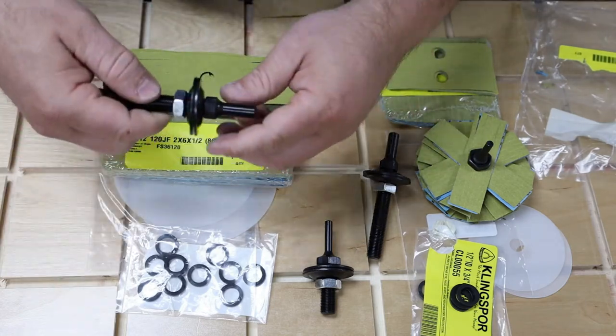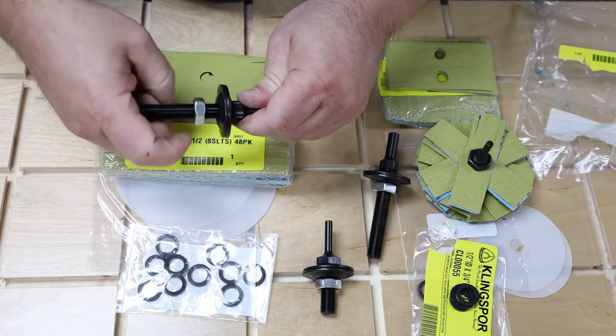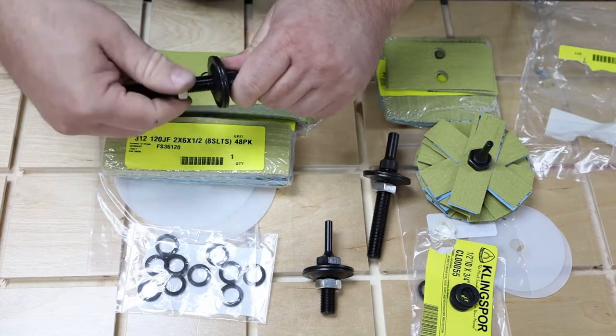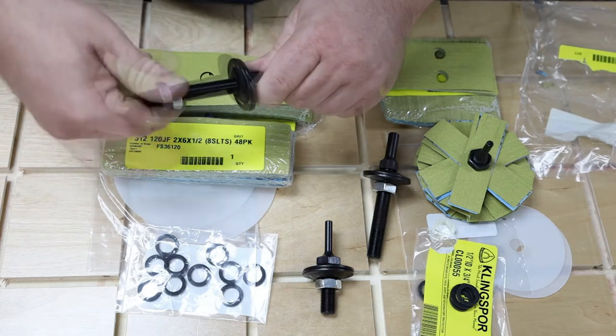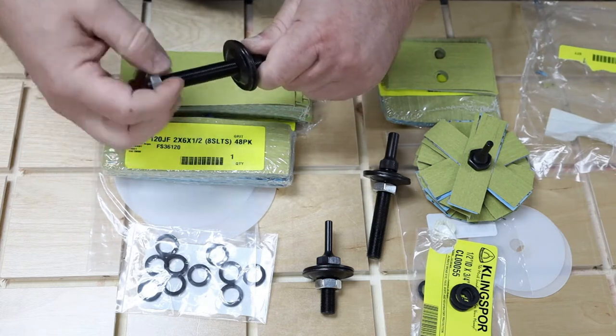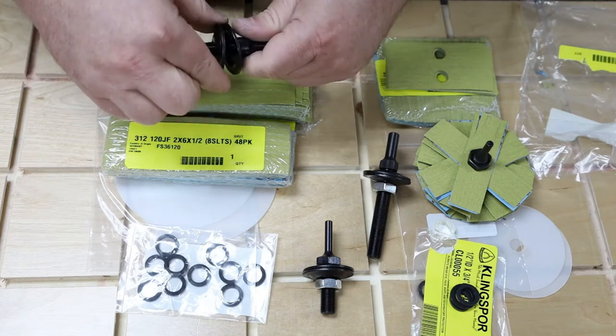Now the first thing you want to do once you get your strips oriented is figure out which mandrel you're going to use and once you do that take the nut off one end. Now these do come with two washers so you do want to take off the nut and the outer washer that's closest to the nut. Leave that furthest one on there.